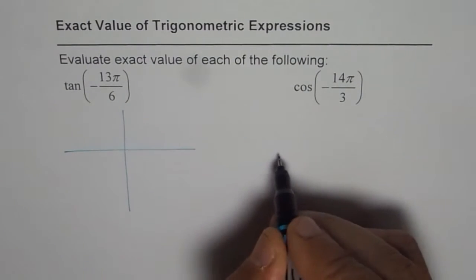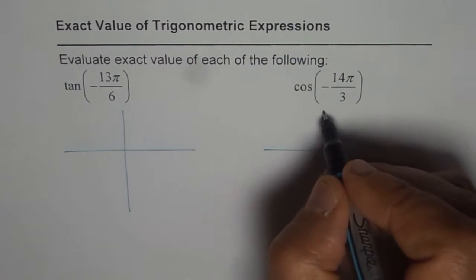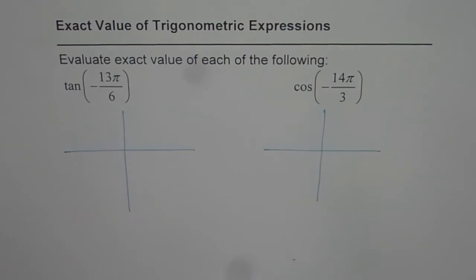First, we need to figure out in which quadrant we will be, and then we have to find the related acute angle. And thirdly, we have to use our special triangle to get the exact value.